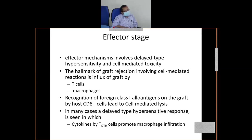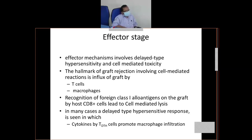Sometimes there will also be some amount of type 4 hypersensitivity reaction, where in the effector phase cytokines are released from DTH cells — the CD4 cells. These cytokines activate macrophages or other antigen-presenting cells, causing massive inflammation. Monocytes will be modified and mature to tissue macrophages, and these tissue macrophages will cause massive destruction of the graft.